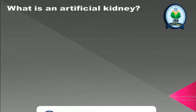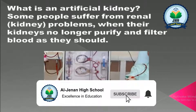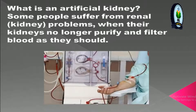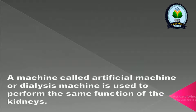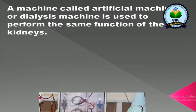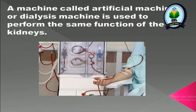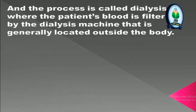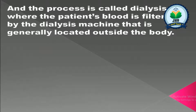What is an artificial kidney? Some people suffer from renal or kidney problems when their kidneys no longer purify and filter blood as they should. A machine called an artificial kidney or dialysis machine is used to perform the same function of the kidneys, and the process is called dialysis, where the patient's blood is filtered by the dialysis machine located outside the body.